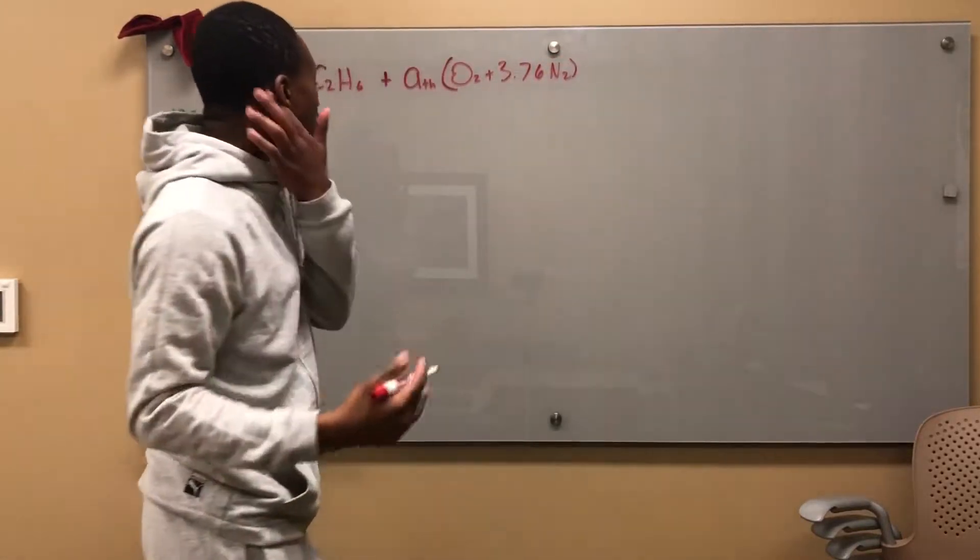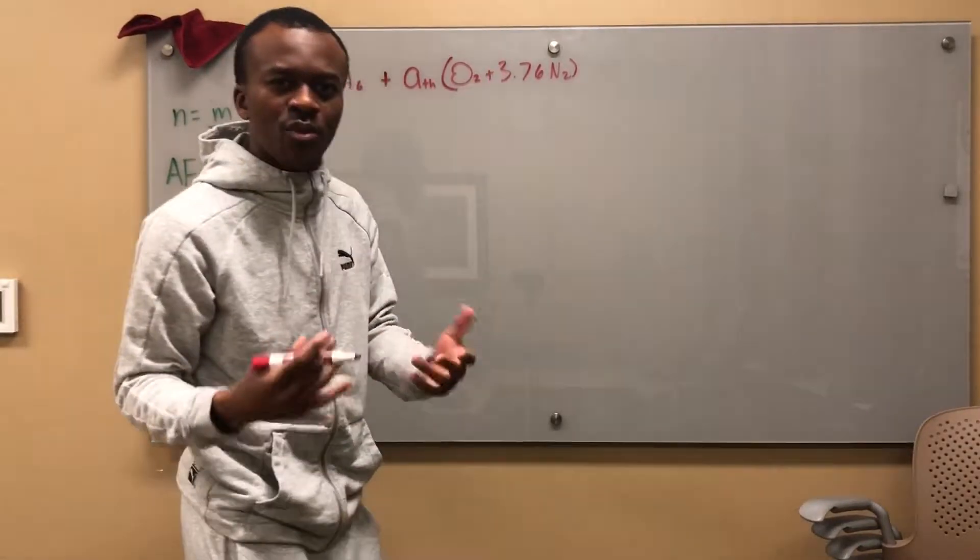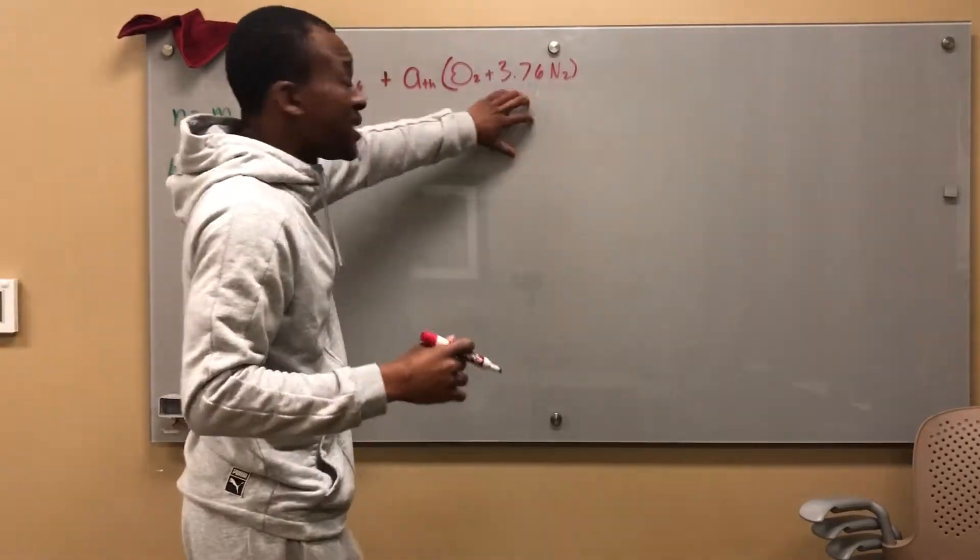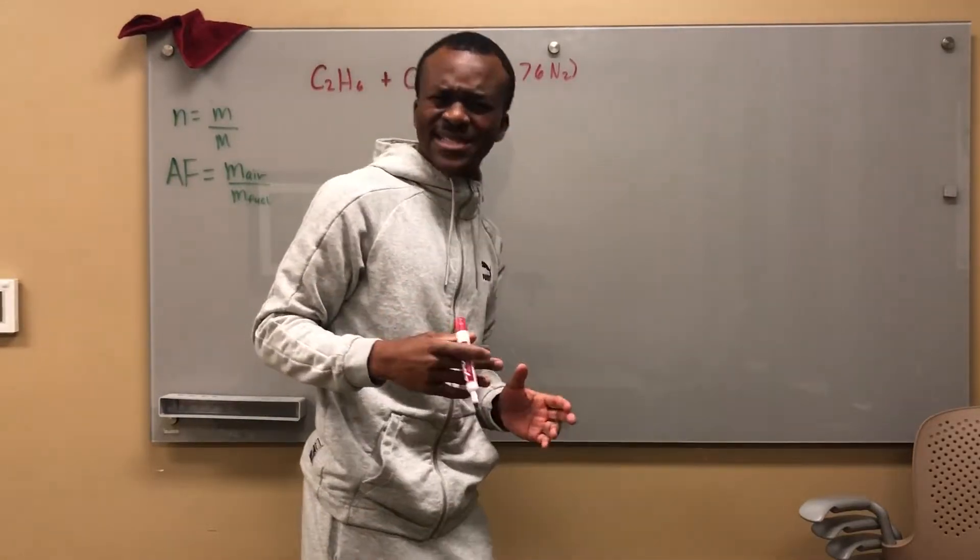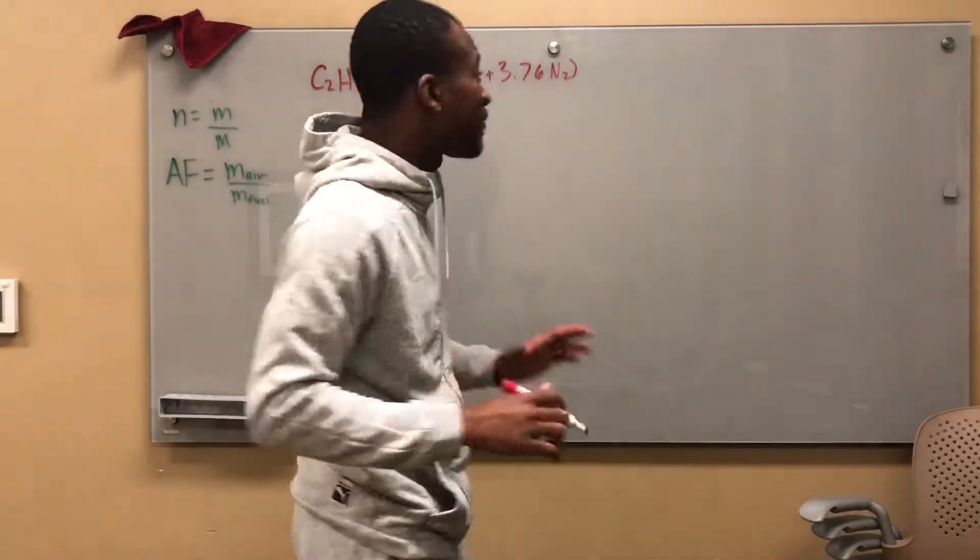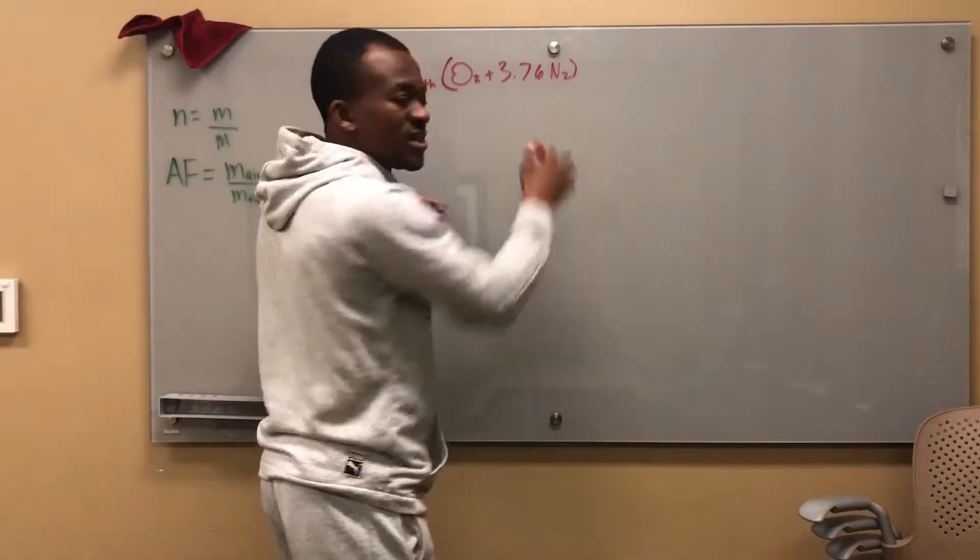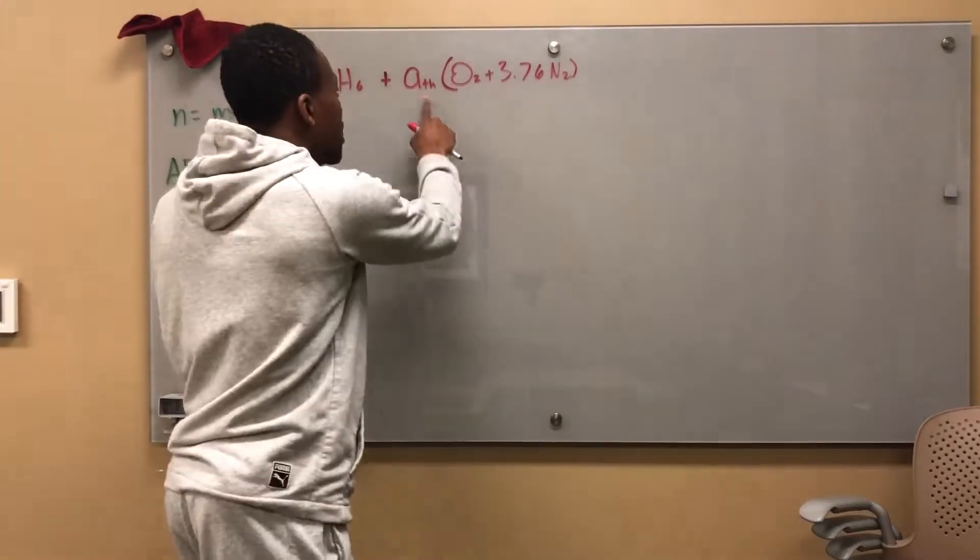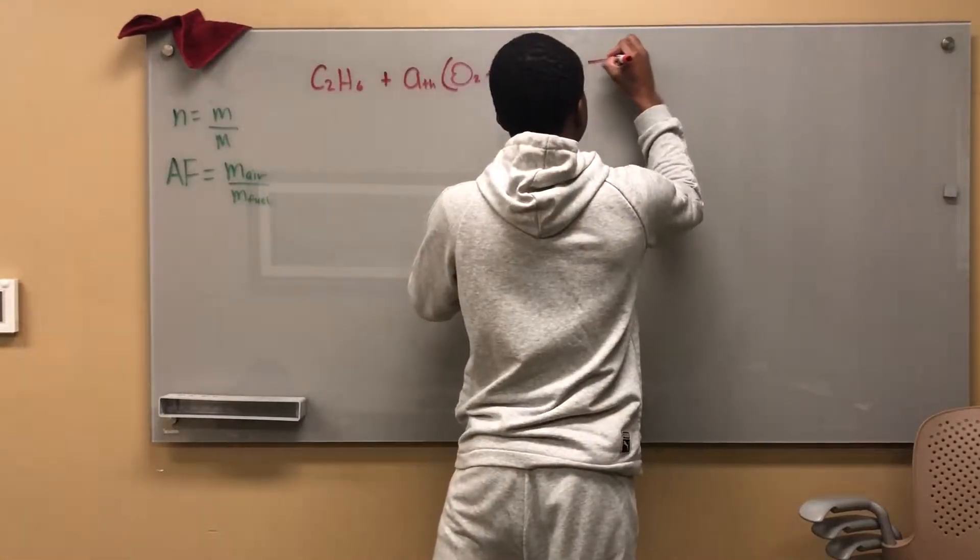And this right here is just what we write. This is the makeup of air. We're ignoring all the carbon dioxide and everything else that's involved. I think air is like 79% nitrogen, I don't remember the exact value, but this is what you end up getting. So it's one part O2, 3.76 parts N2. And that whole thing makes up your air molecule. And then this is the unknown amount of air, right?